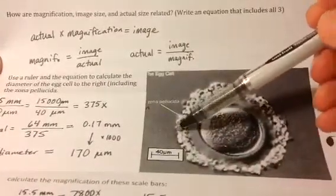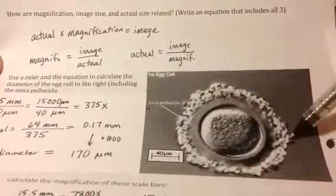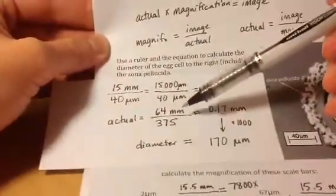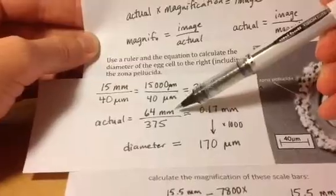Now, I can measure the actual object. So, I measure from side to side the diameter. And on the paper, that was 64 millimeters.